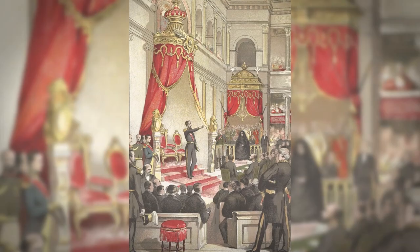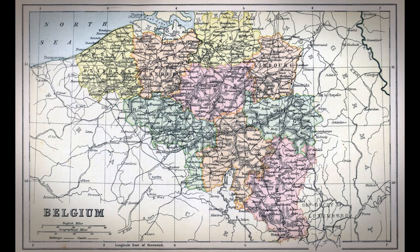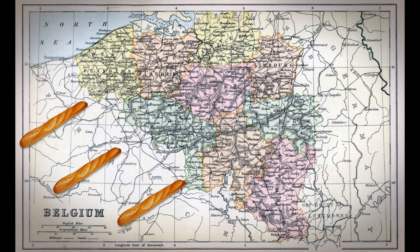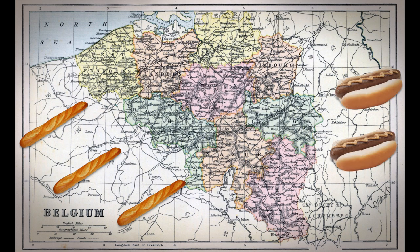In 1865, Leopold II, the eldest surviving son of King Leopold I, was crowned as the new king of Belgium. He was an ambitious man who wanted to increase the power and wealth of the tiny new nation. Belgium, after all, was very small in comparison to its neighbors and had only existed for 34 years.